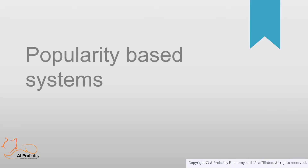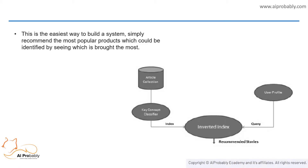Now let's see what popularity-based systems mean. As the name suggests, popularity-based recommender systems work with trends — basically the items which are trending right now. For example, let's take Instagram. If a page on Instagram is liked by many users, when a new user signs up it will be suggested to that new user as well. The same goes for stories and reels on Instagram. This is how a user's profile is recommended to a new user.